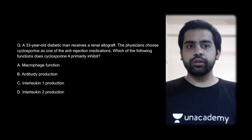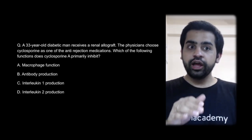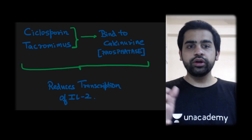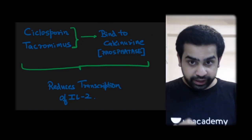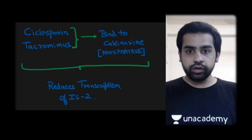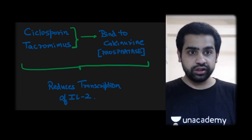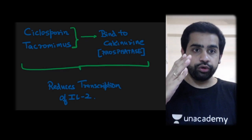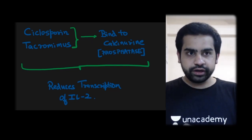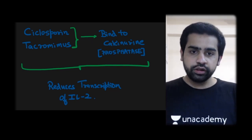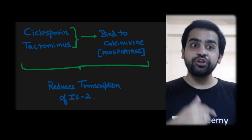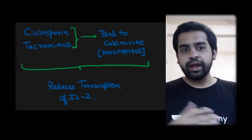Looking deeper into this question: the patient is diabetic, and the physician chose cyclosporine rather than tacrolimus. Why? Because tacrolimus is associated with diabetes as one of its side effects. Therefore, in a diabetic patient, it is better to use cyclosporine. Both are calcineurin inhibitors, but if the patient is diabetic, prefer cyclosporine over tacrolimus.